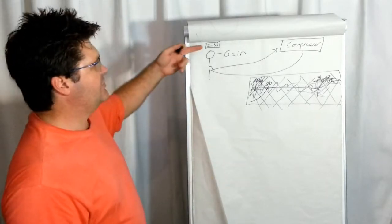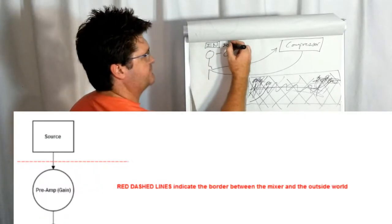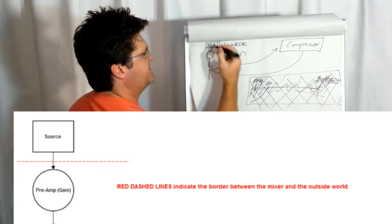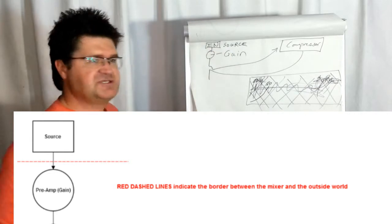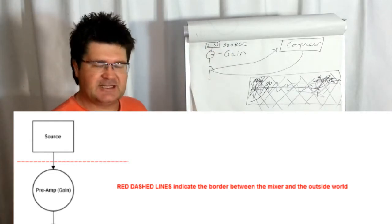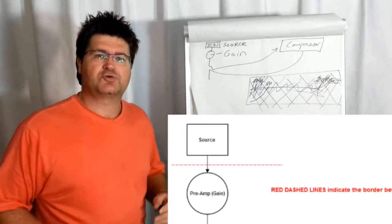Firstly, you have your input or your source. This signal goes to the gain. The gain will be where you set up a usable level. The gain is that which controls the preamp.